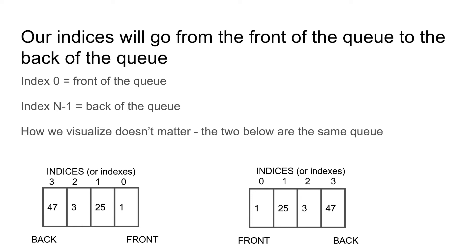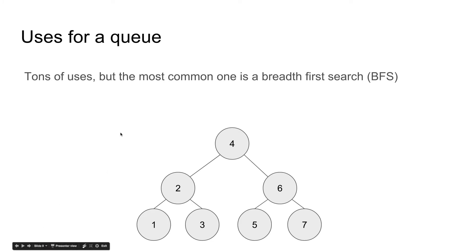Below I have two visualizations showing the same example — it doesn't matter if you put the front and back on the left or the right; the indices always map so that zero is at the front and whatever the highest number is, is at the back. I should also mention that we won't be going over all the uses for a queue right now, but the most common one is BFS. I do have another video covering graph theory and graph algorithms including BFS, but I had to make this one first to explain what a queue is.